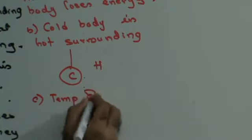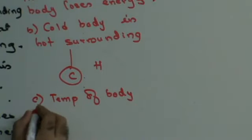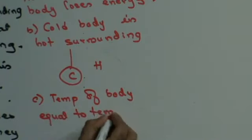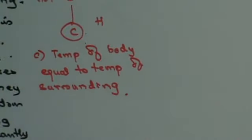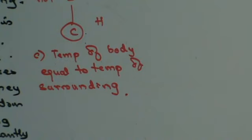Third condition: the temperature of the body is equal to the temperature of the surrounding. There will be no change in the temperature of the body. The body continues to radiate heat to the surrounding. At the same time it absorbs heat from the surrounding. But on account of both being at the same temperature, the body radiates the same energy per unit time as it receives per unit time. As a result, there is no change in the energy of the body and there is no change in the temperature.